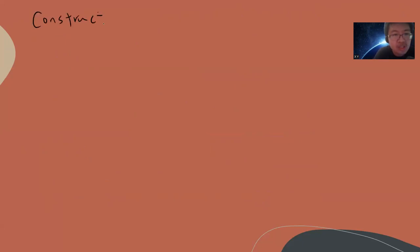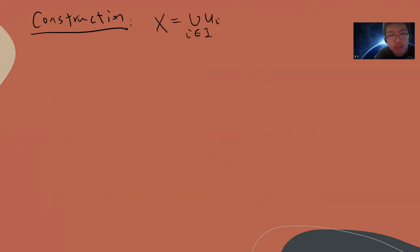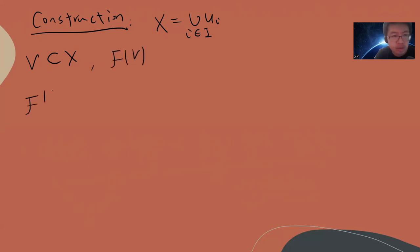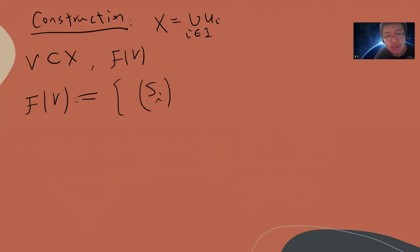The rest of this video describes in detail how to construct this sheaf F — something that is sometimes the missing part that people have not discussed. So: the construction. X is the union of the U_i's. For any open set V, you need to define F(V).